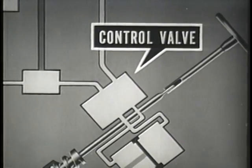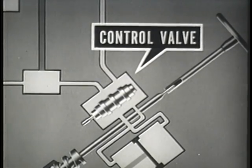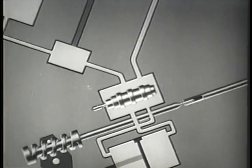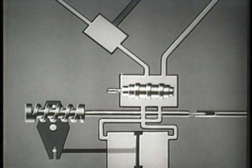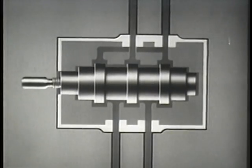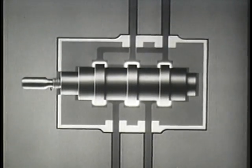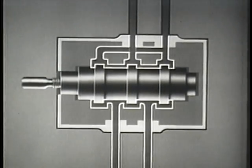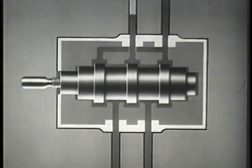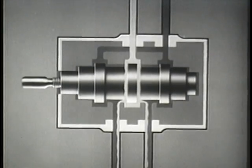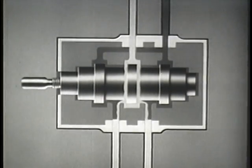The control valve is the heart of the hydraulic steering system. The control valve has a spool which directs and controls the flow of fluid to the power cylinder. With the fluid removed, let us look at the internal construction of the control valve. The spool has lands which control the flow of fluid through the passageways to the power cylinder. The fluid enters the control valve through the inlet port and flows around the spool in channels leading to the power cylinder.